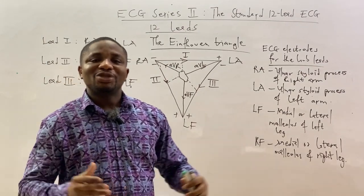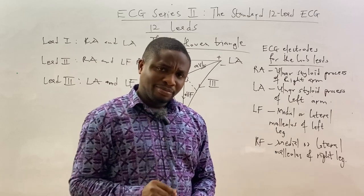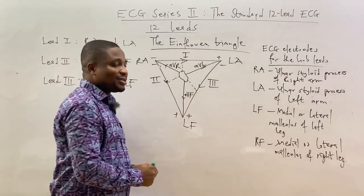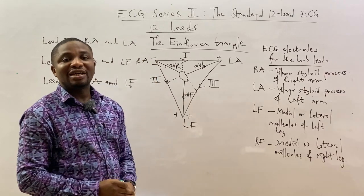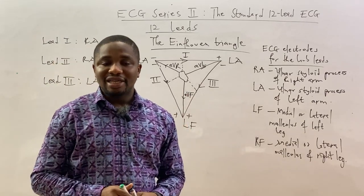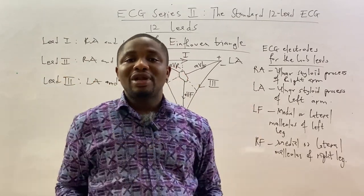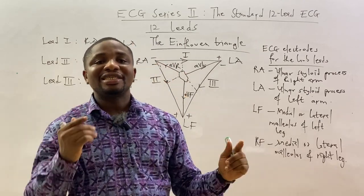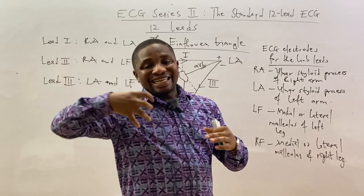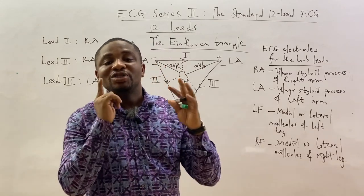Now let's talk about the augmented voltage leads — AVR, AVL, and AVF. These are unipolar because they have only a single charge at the end of the lead, meaning they all use the heart as the second imaginary point. For AVR — augmented voltage to the right — you take the midpoint of the left arm electrode and the left foot electrode, and the imaginary line flows through the heart toward the right arm electrode.